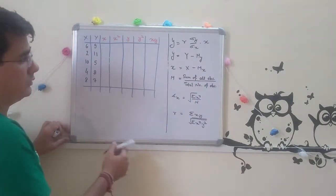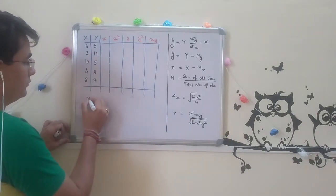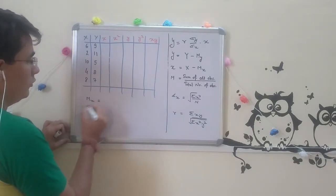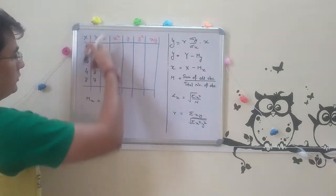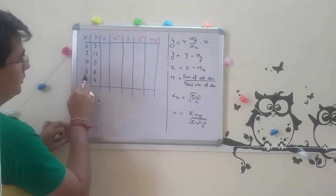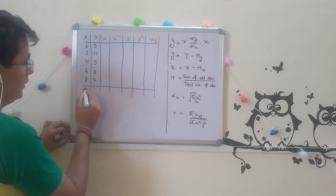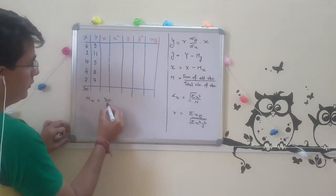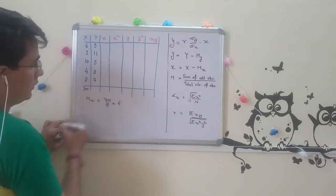Mean of x would be sum of all observations, that means sum of x. I will be getting 10, 20, 30, it will be 30. So 30 over 5, it is 6.